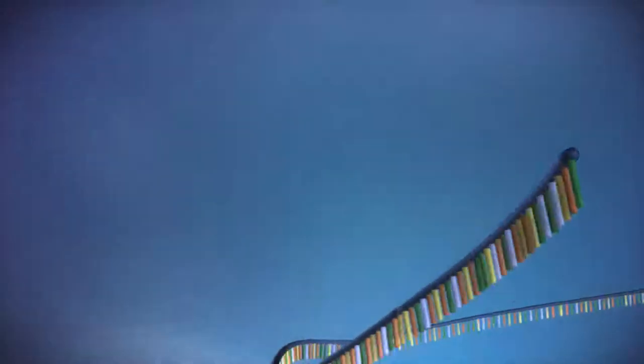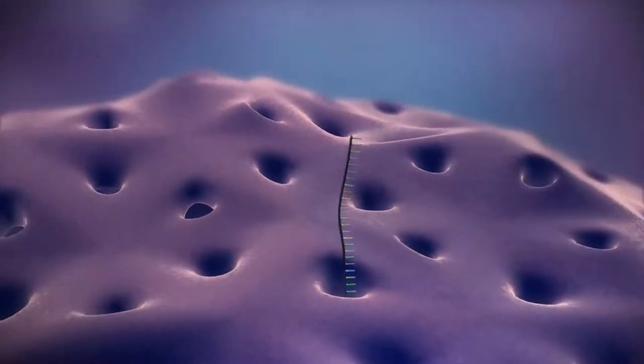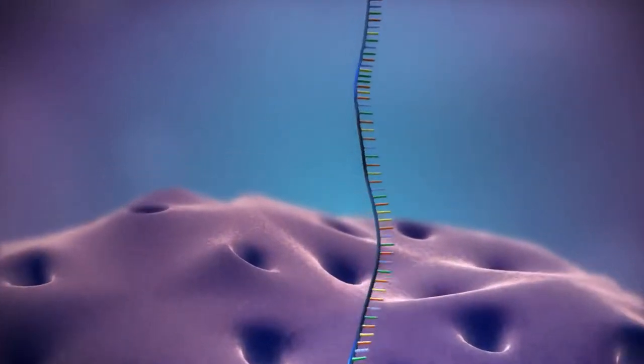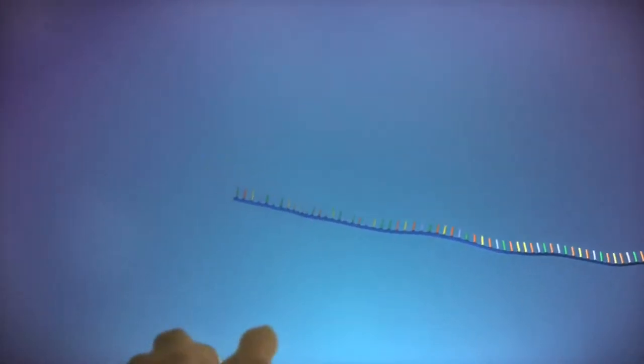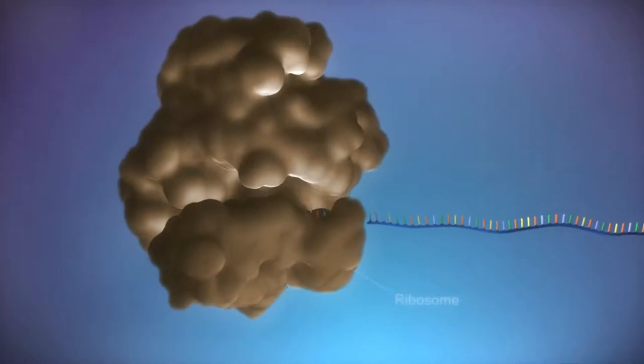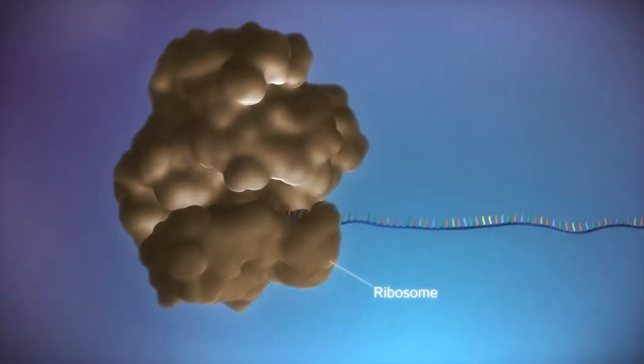The messenger RNA then moves out of the nucleus into the cytoplasm. Protein factories in the cytoplasm, called ribosomes, bind to the messenger RNA.